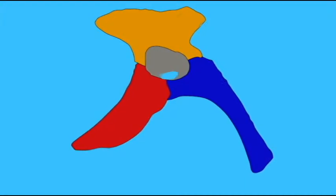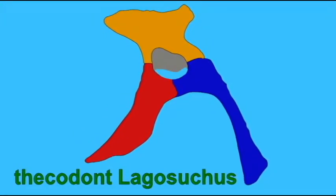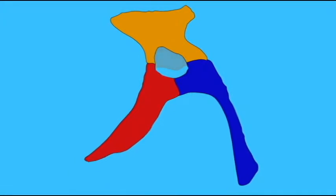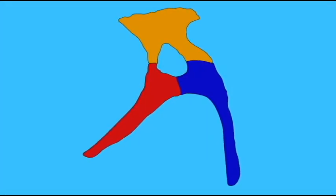But as thecodonts evolved, and we get to forms like Euparkeria, there were processes coming off of the pubis and the ischium larger for muscle attachment.